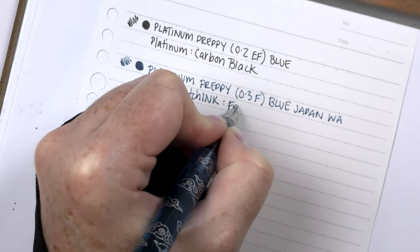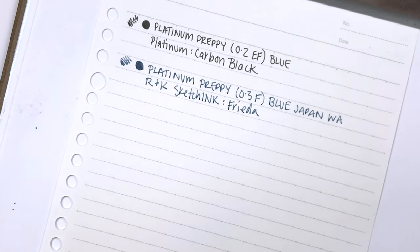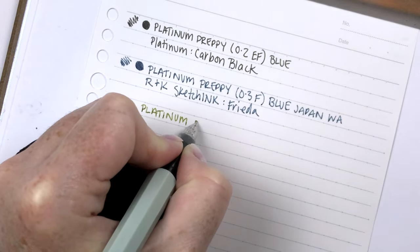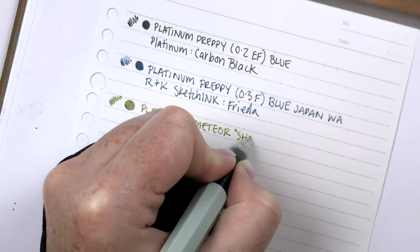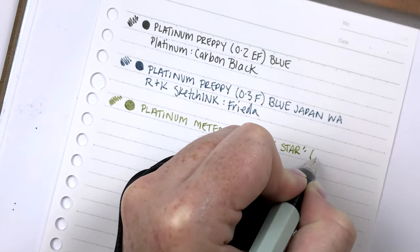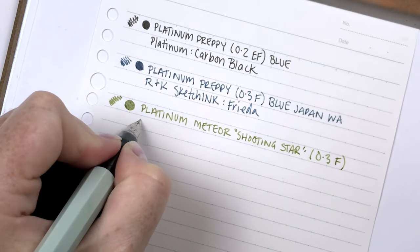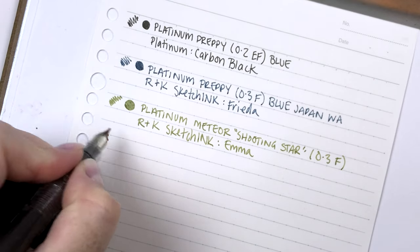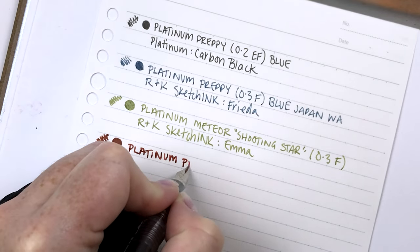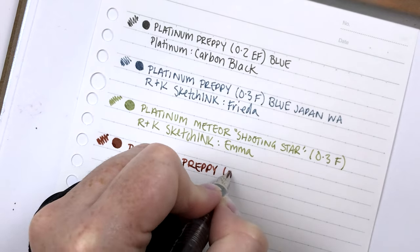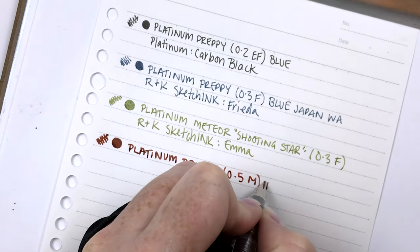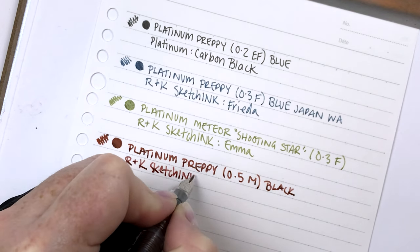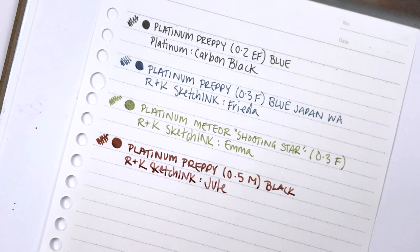In the Black Preppy above, I used the Platinum Carbon Black, which is pigment ink. This is also a pigment ink, the Rohrer and Klingner sketch ink in Frida. I also used the sketch ink in this Meteor, which is the same width as the one above, 0.3 fine. This is the Platinum Medium, which I didn't show in the footage, but this is a 0.5 and it is a really different line width. It's super juicy. The Platinum Mediums are really juicy and the 0.5 is just so smooth and nice.